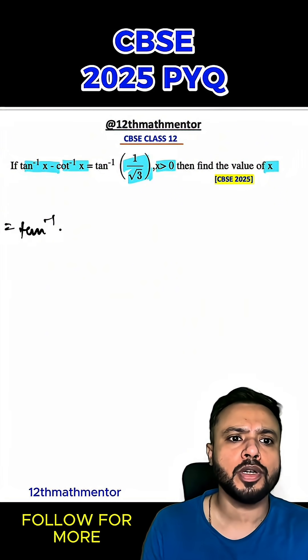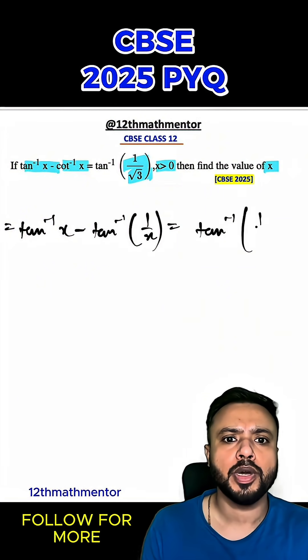To solve this question, first I'm going to convert cot⁻¹(x) into tan⁻¹(1/x), which equals tan⁻¹(1/√3).